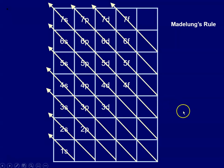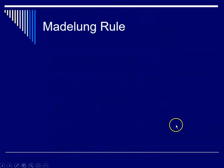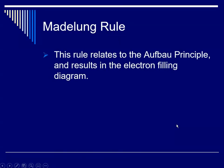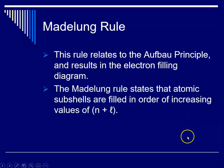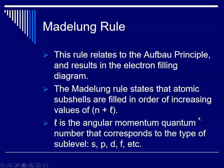They fill in according to this diagram. The Madelung rule relates to the Aufbau principle and gives the order in which orbitals fill according to energy. It states that atomic subshells are filled in order of increasing values of N plus L, where L is the angular momentum quantum number — corresponding to the type of sublevel: S, P, D, or F.